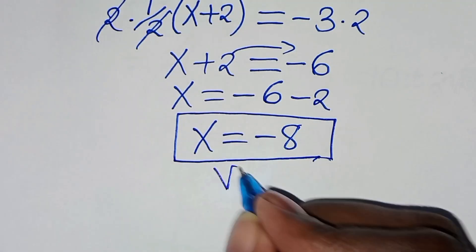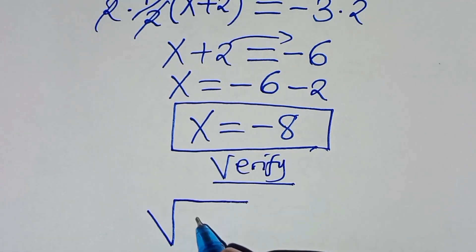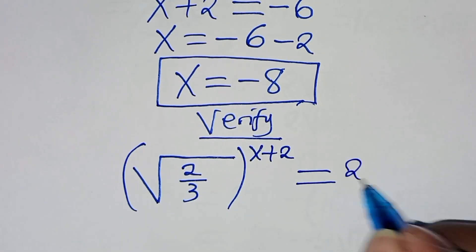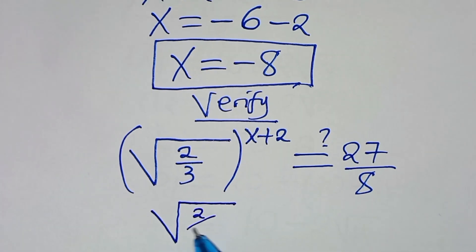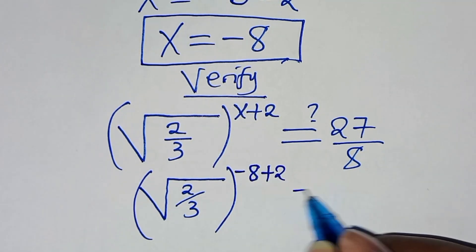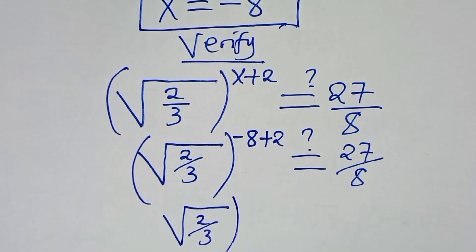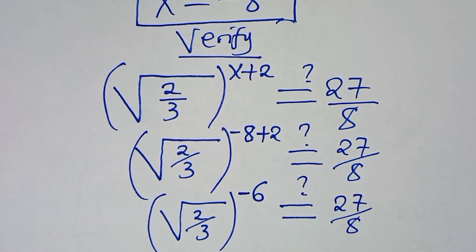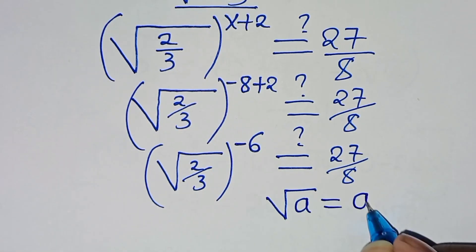Let's verify that x equals minus 8 satisfies the equation. We have the square root of 2 over 3 raised to the power of x plus 2, which should equal 27 over 8. Substituting x equals minus 8, we get the square root of 2 over 3 raised to the power of minus 8 plus 2, which is minus 6. This should give 27 over 8. Since the square root of a equals a to the power of one half, we apply this property: 2 over 3 raised to the power of one half, multiplied by minus 6.